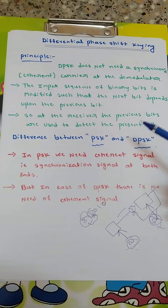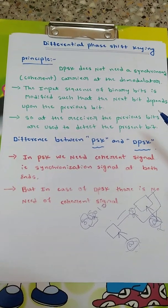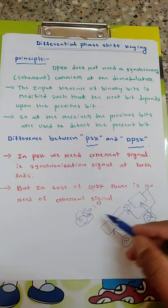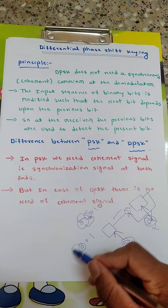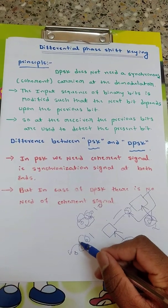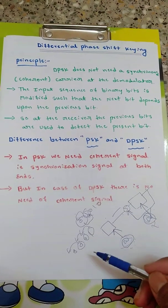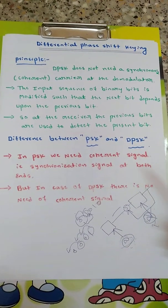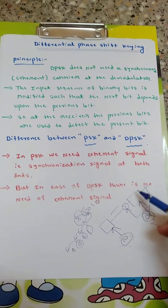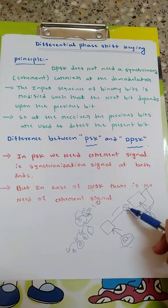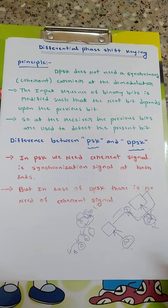The input sequence of binary bits is modified such that the next bit depends upon the previous bit. At the receiver, the previous bits are used to detect the present bit — previous bits are fed back to detect the present bits. That's the working of differential phase shift keying.